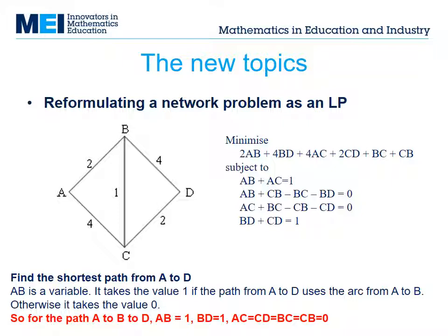The topics that will be new to some teachers are reformulating a network problem as a linear programming problem and using technology to solve LPs. Here's an example which is trivial in size but shows how it works. The problem is to find the shortest path from A to D. Of course you can use Dijkstra, or you can write it as an LP so that you can use an LP solver package. The linear program — the LP — is on the right.